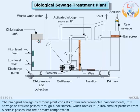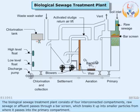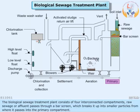The biological sewage treatment plant consists of four interconnected compartments. Raw sewage or effluent passes through a bar screen which breaks it up into smaller particles, from where it passes into the primary compartment.